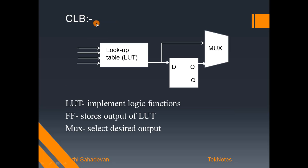The CLB — Configurable Logic Block — contains logic elements. The basic building block of a CLB is the look-up table (LUT), which is used to implement logic functions. The output is stored in a flip-flop. A multiplexer is then used to select the desired output. These are the basic elements inside a CLB.